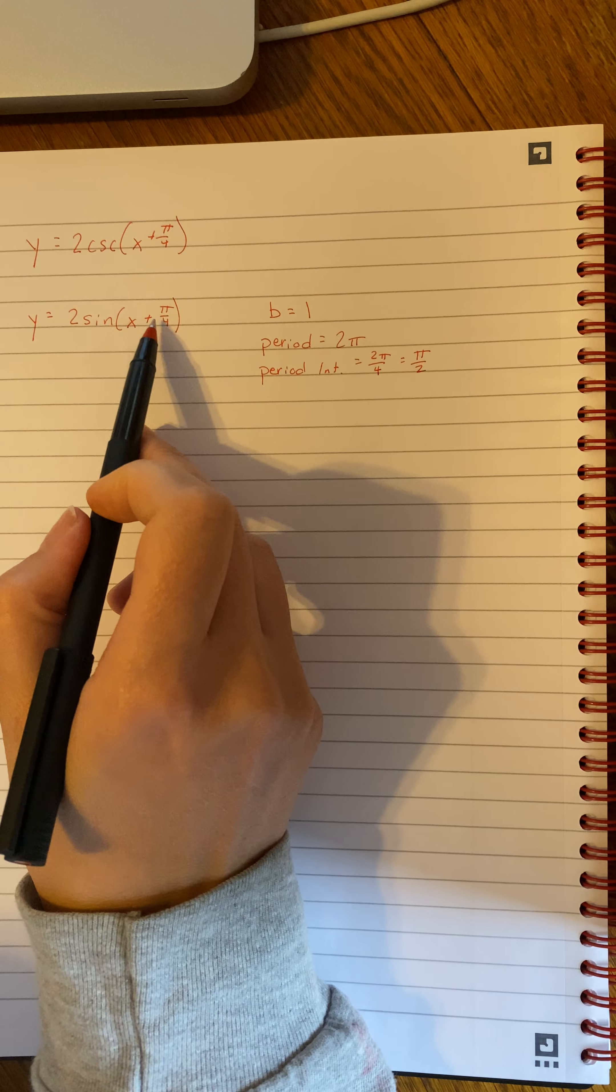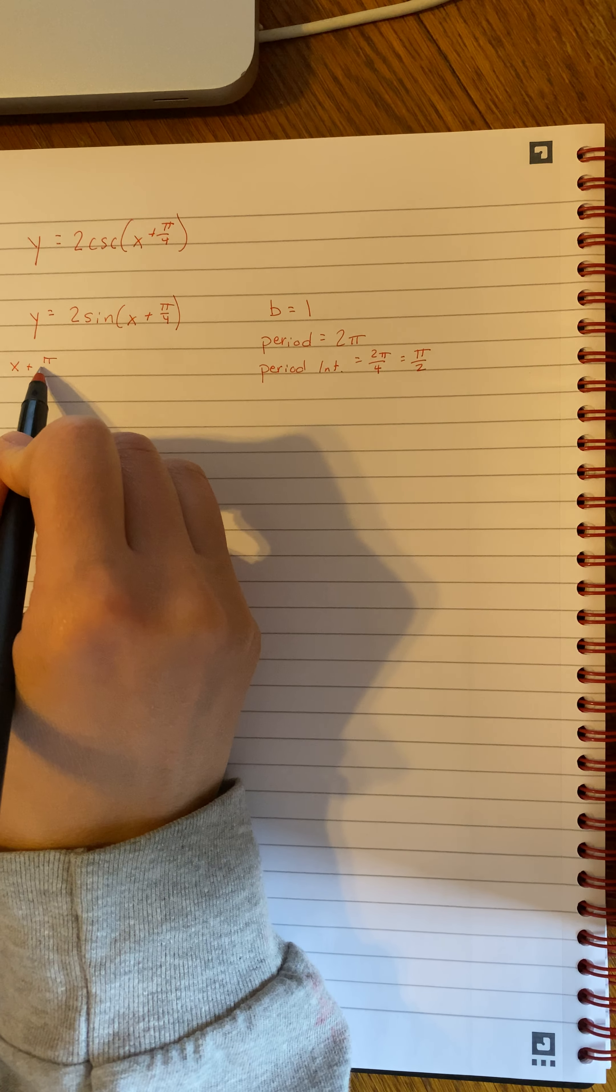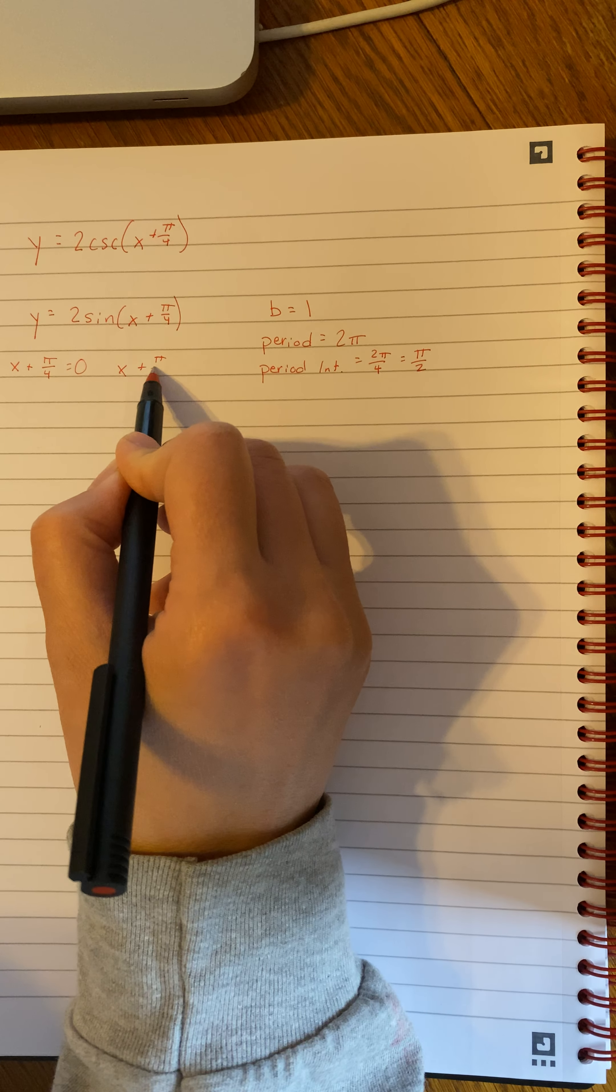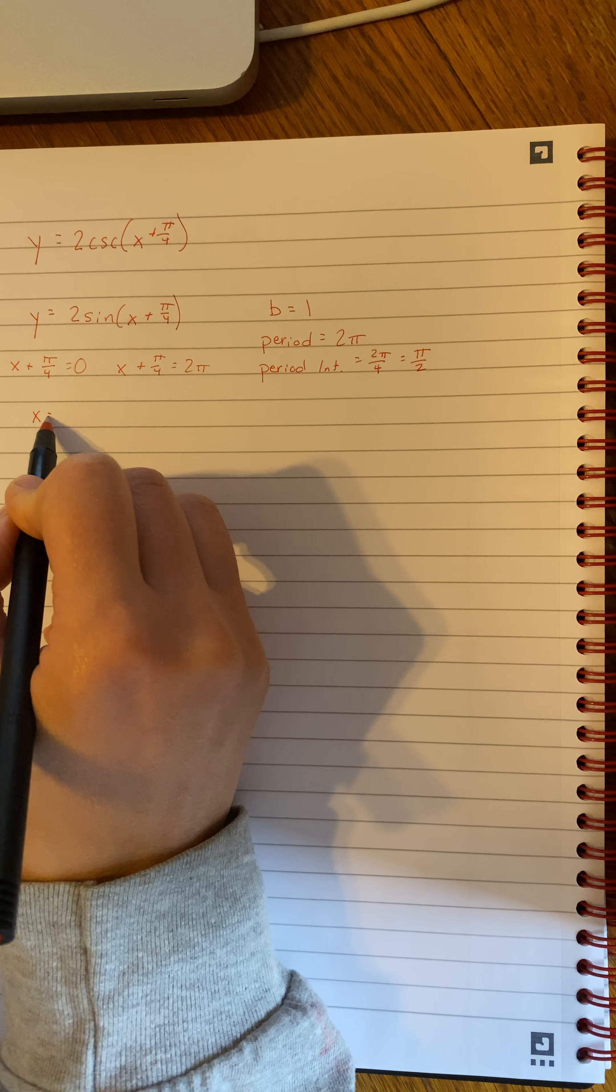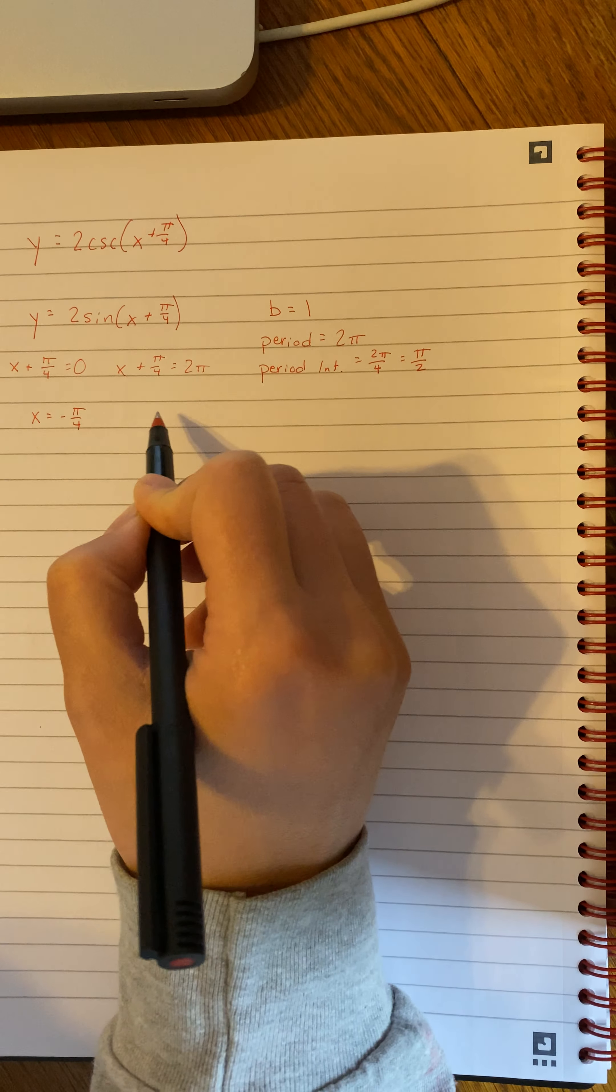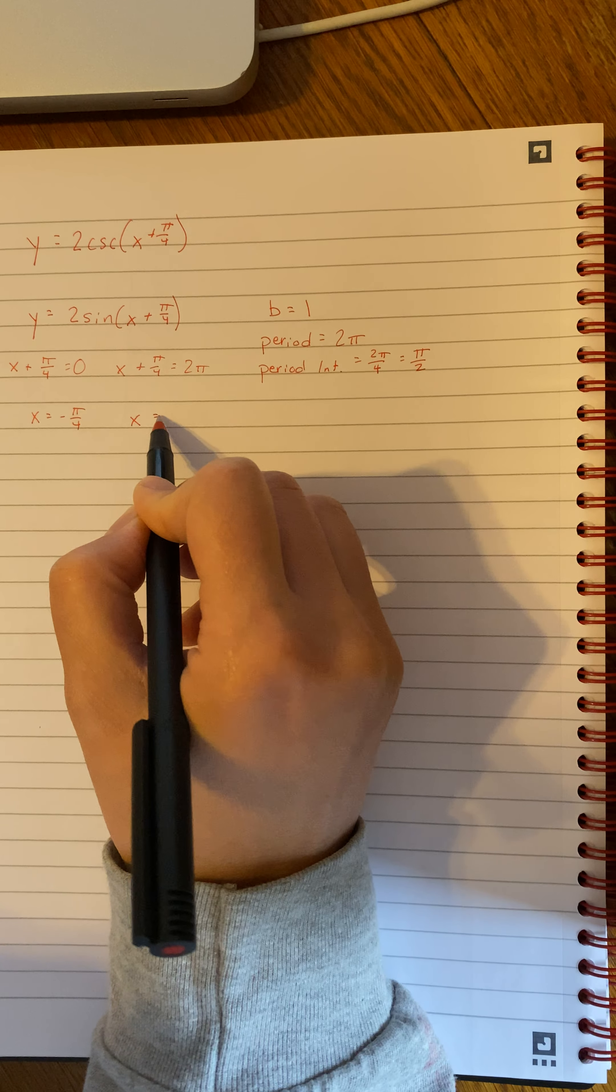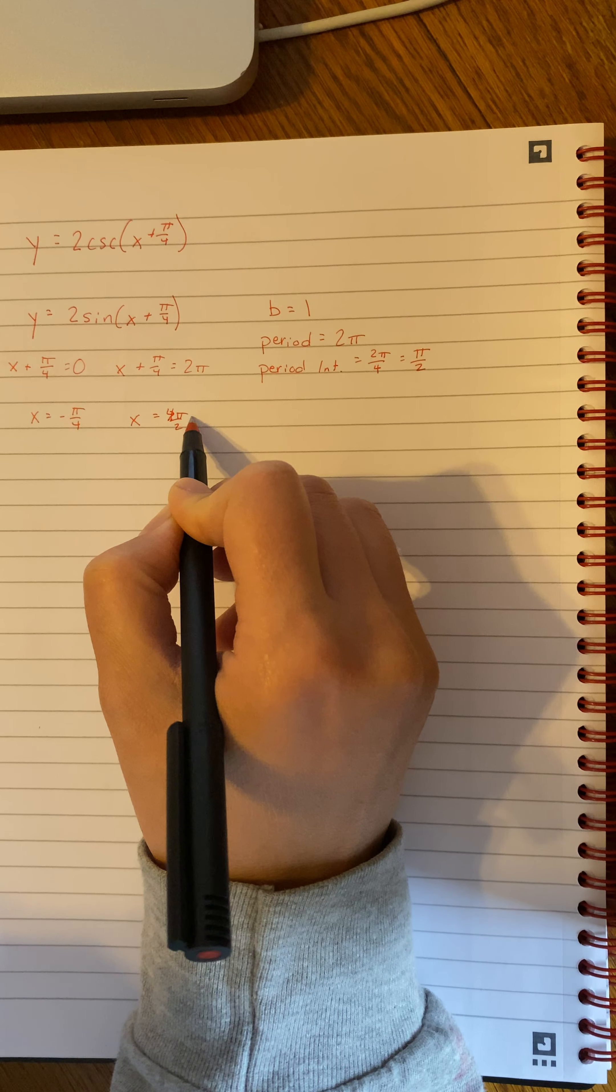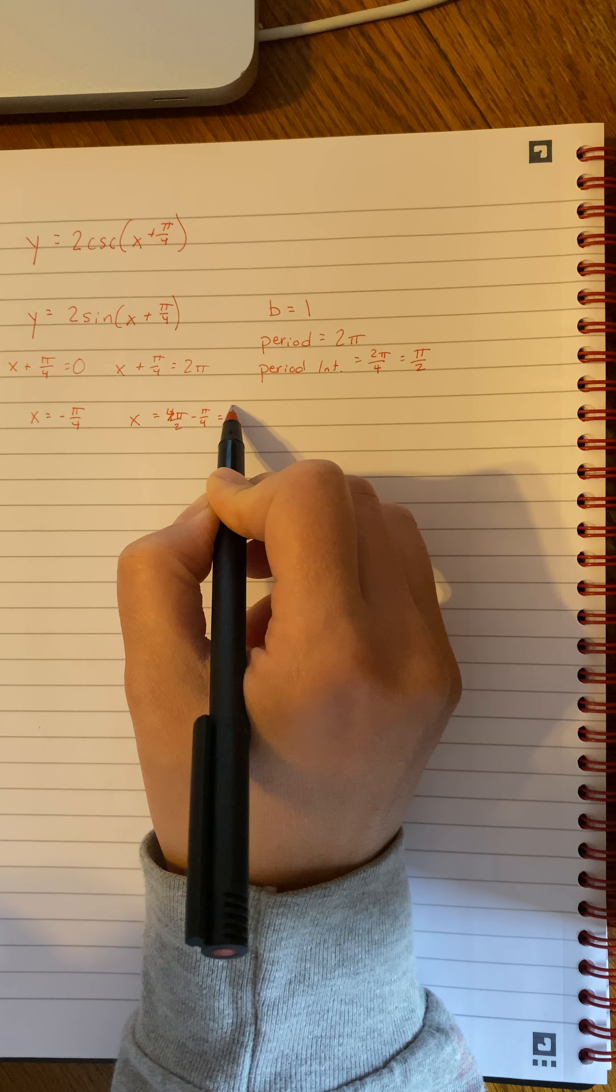So I need to figure out this value of c is going to shift my graph, so I'm going to set it equal to my regular period, which is 0, and then x plus pi over 4, and then 2 pi. So here I get x equals negative pi over 4, and here I get x equals 4 pi over 2 minus pi over 4.